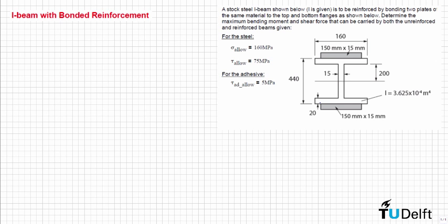In this problem we have an I-steel beam which needs to be reinforced by bonding two plates of the same material to the top and bottom flanges, as you can see here — this one and this one are the reinforcements. We need to determine what is the maximum bending moment and shear force that can be carried by both the unreinforced and the reinforced beam.